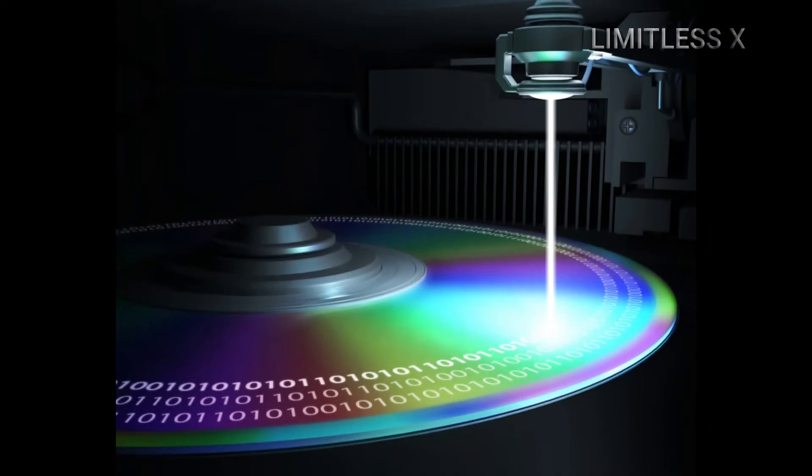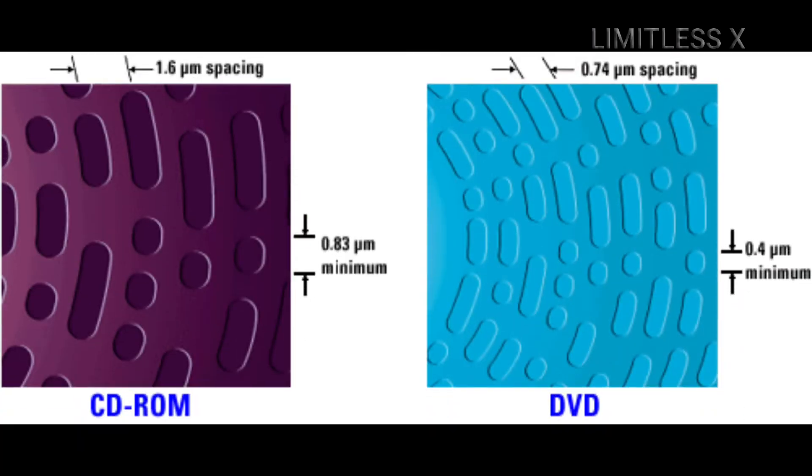Since the disk keeps rotating, the laser strikes the pits and lands in the sequence in which they are imprinted. Whenever a transition occurs from a pit to a land or vice versa, the intensity of reflected light reaching the sensor changes.